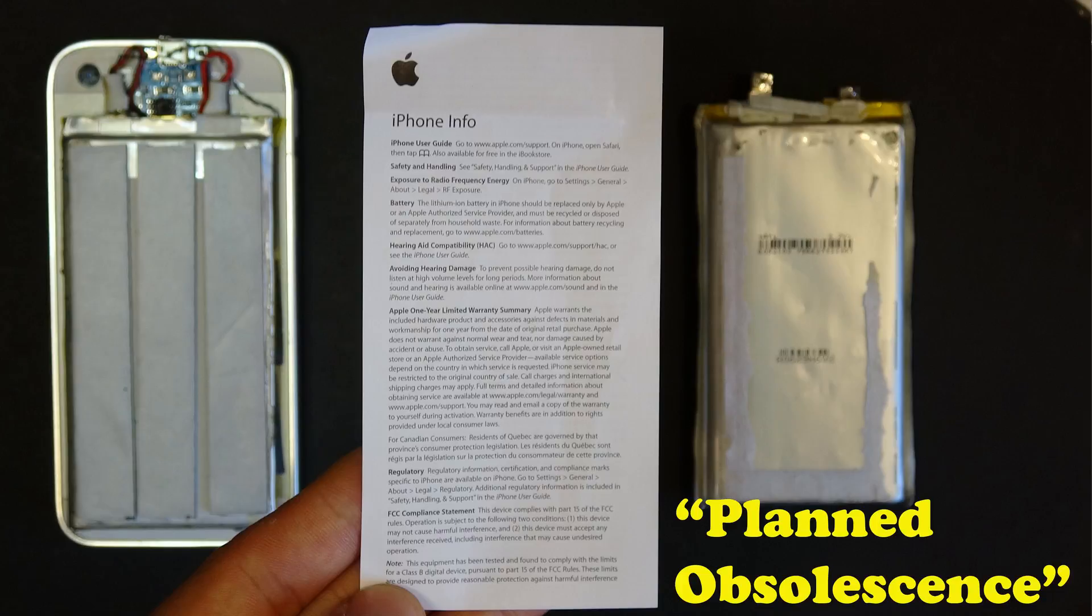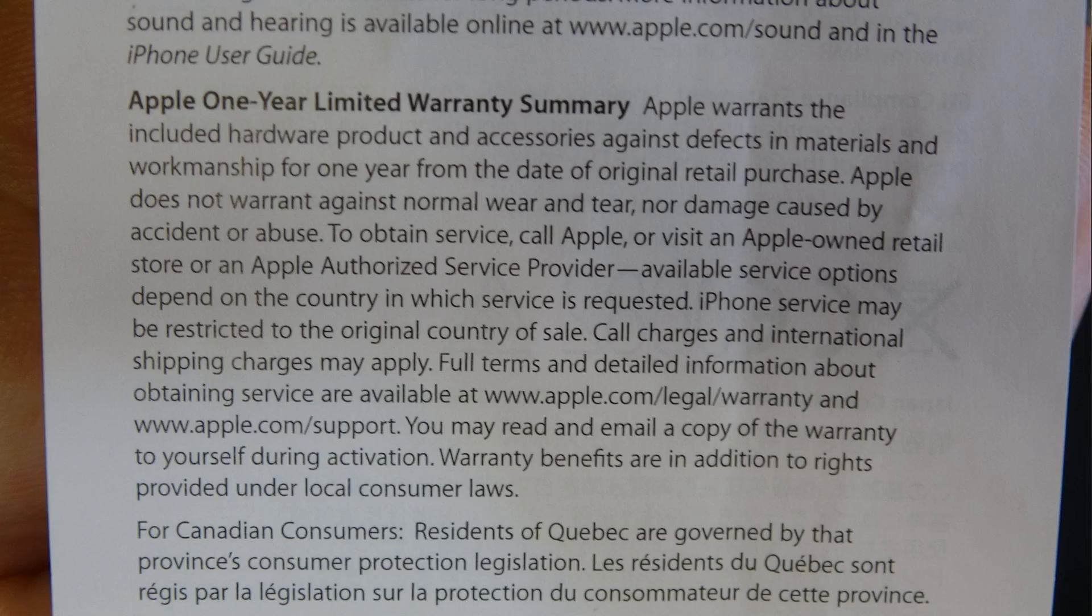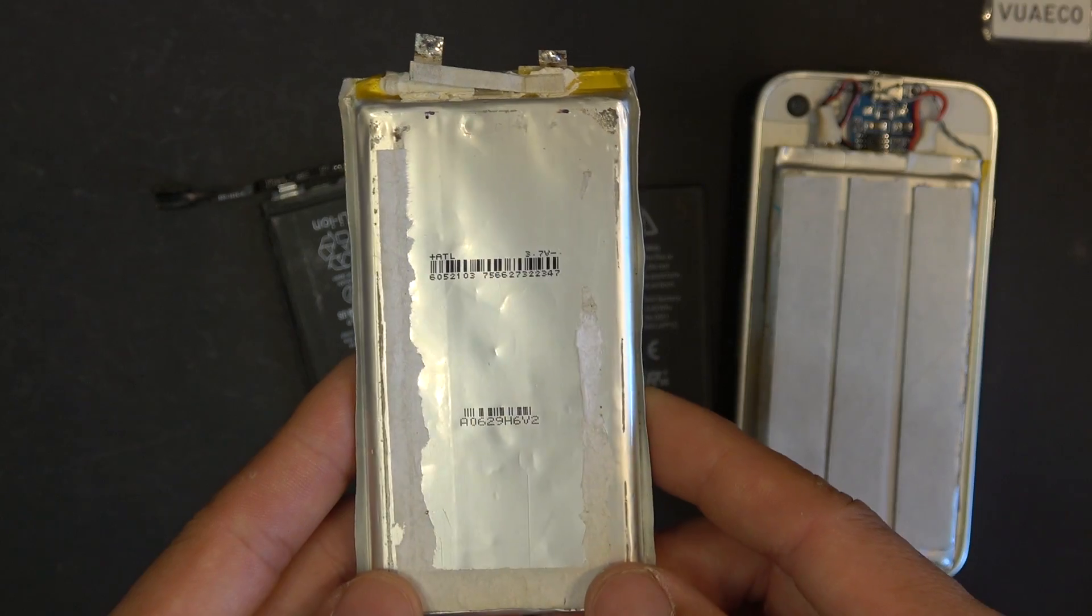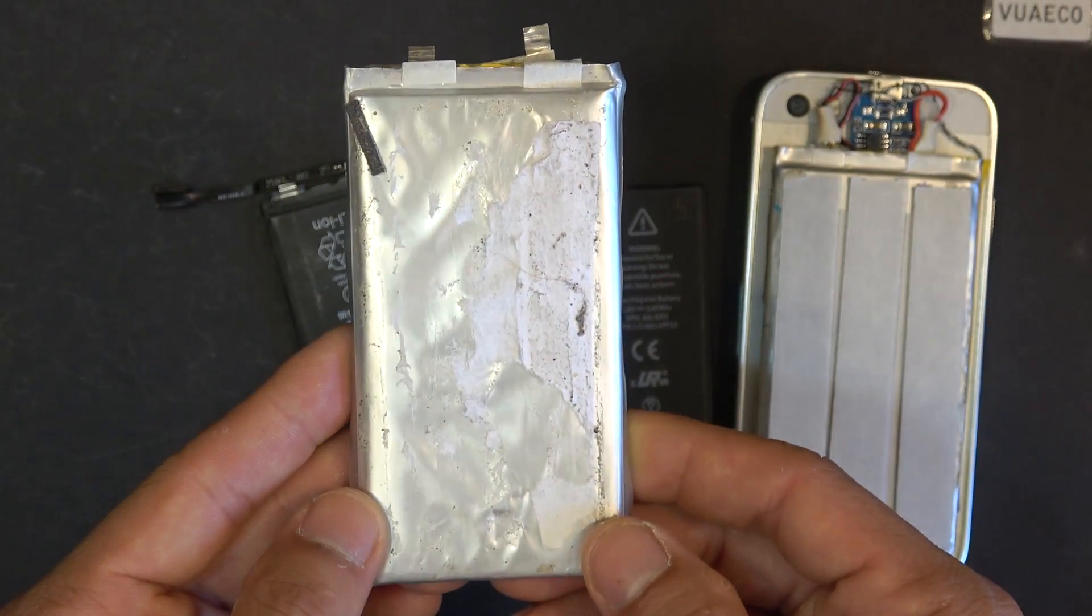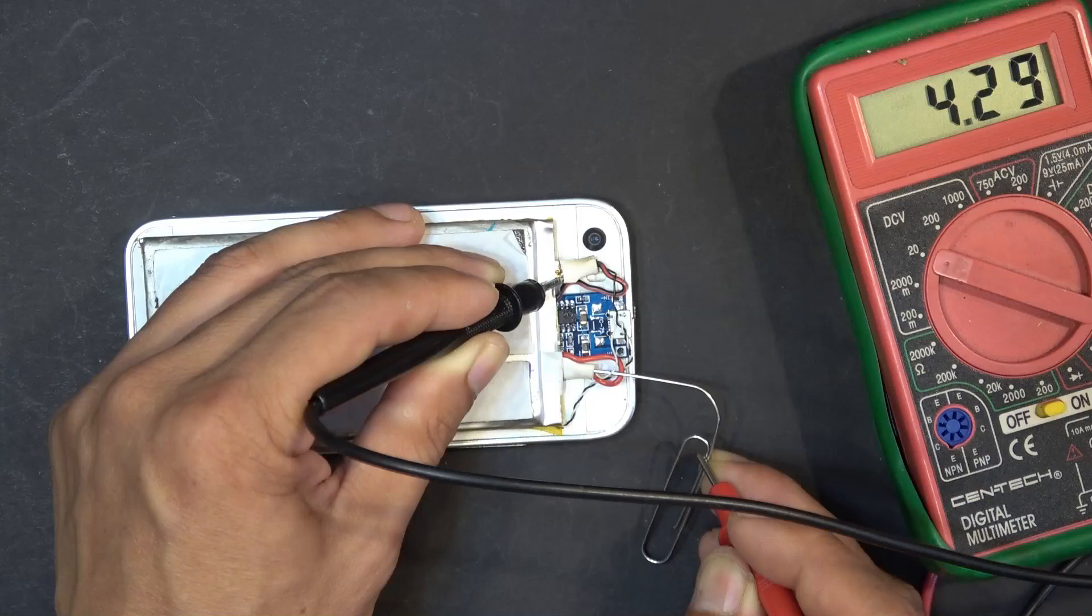This is what we call planned obsolescence. This is to keep the battery to operate up to a certain point, usually within the manufacturer's warranty time frame. Once the warranty period is over, this overcharging scheme is taking its toll on the battery. They are very clever in this though. By just overcharging the battery just a little bit and not too much, it doesn't kill the battery right away.